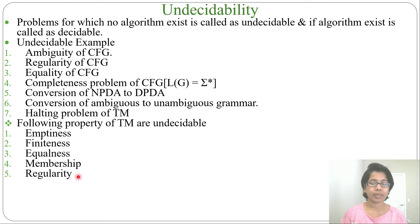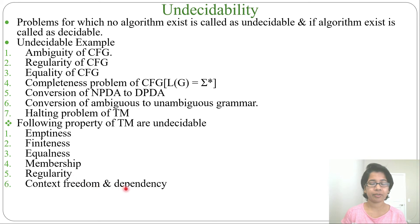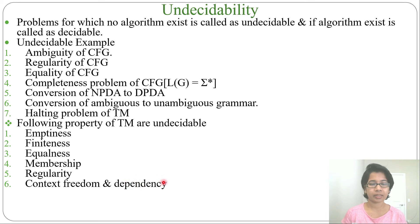Next is regularity: given a Turing machine, whether it is for a regular language or not is undecidable. Next is context-freedom and context-dependency — it is undecidable whether a Turing machine is for a context-sensitive or context-free language. Context-sensitive language is context-dependent and context-free language is context-free. Next, recursiveness: there is no algorithm for checking recursiveness of a Turing machine.